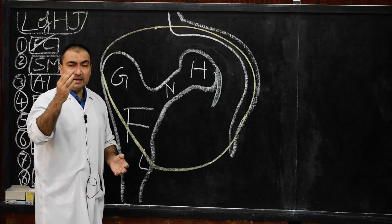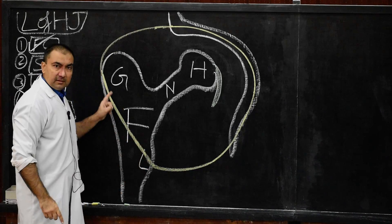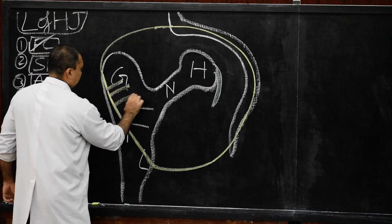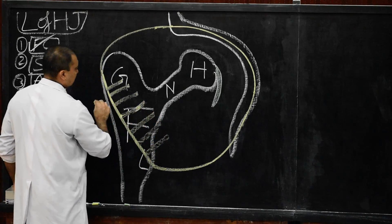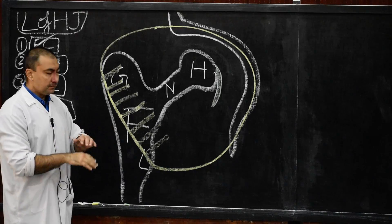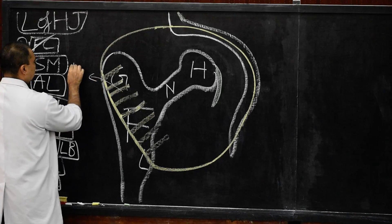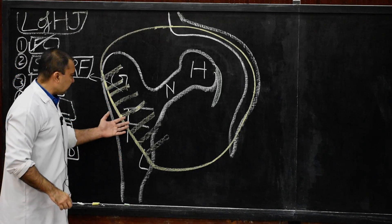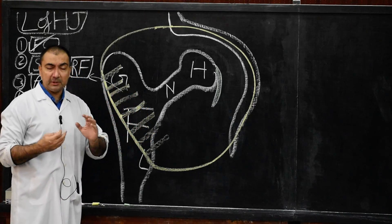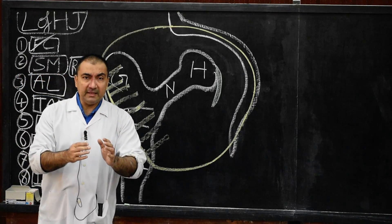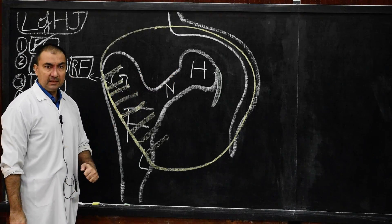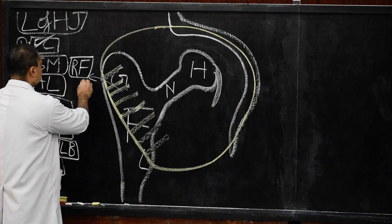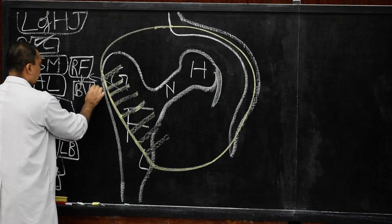Next are the retinacular fibers. From the lower attachment on the intertrochanteric line, some fibers pass upwards and medially, deep into the capsule. These are called retinacular fibers. Their purpose is to allow passage of blood vessels to the head and neck of the femur.